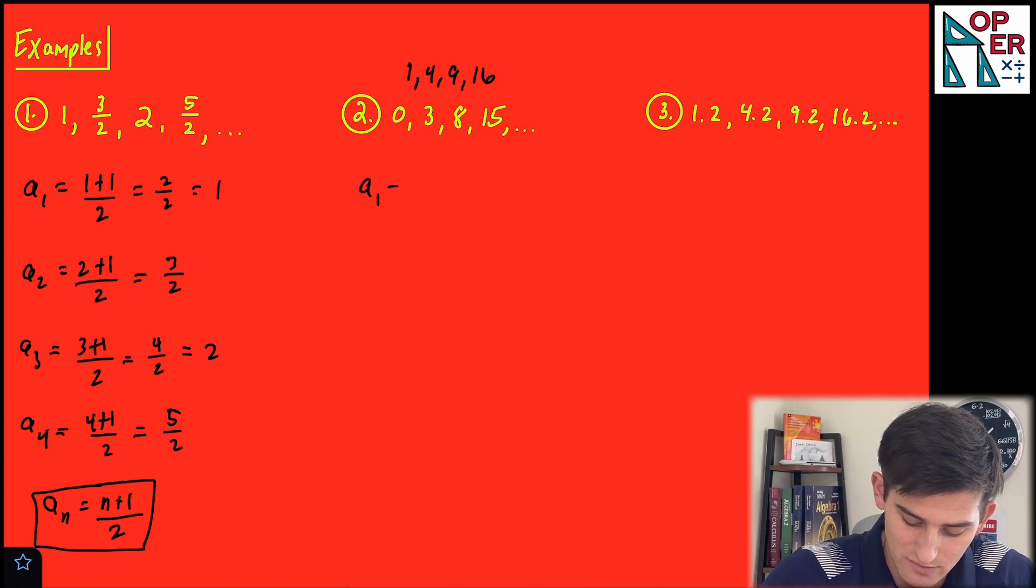So we could write this as a sub 1 equals 1 squared minus 1, which would be 0. A sub 2 would be 2 squared minus 1, which would be 3, because 2 squared is 4. 4 minus 1 is 3. 3 squared minus 1, so 9 minus 1.